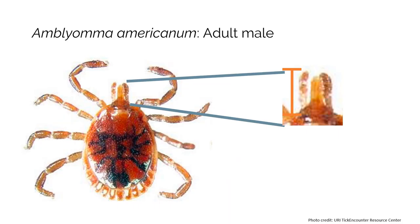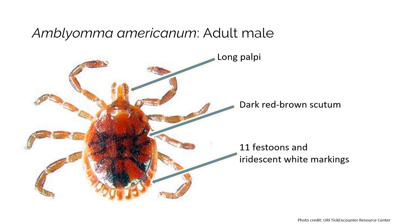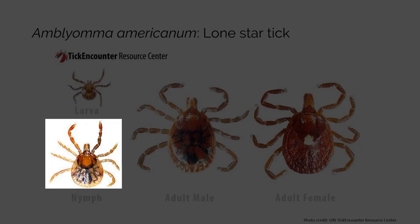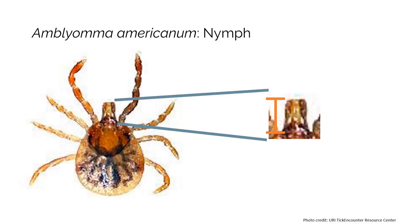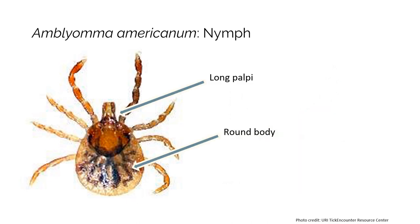Now let's look at the adult male. The adult male lone star tick also has palpi that are longer than the width of the basis capitulum. Its scutum is a dark reddish brown and it has 11 festoons with iridescent white markings near those festoons — like light that reflects off the tick. The iridescent white markings and the circular shape are the best identifiers for the lone star tick by photos. Finally, let's look at the nymph. The nymphal lone star tick also has palpi that are longer than the width of the basis capitulum. Compared to the black-legged tick nymph, the lone star tick nymph is far more circular. The round body is key to identifying the lone star tick nymph.